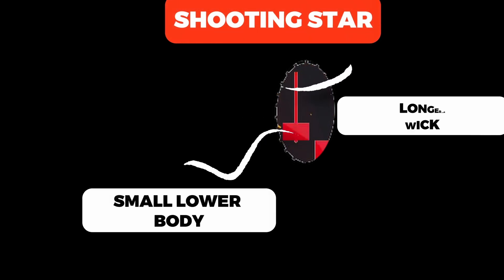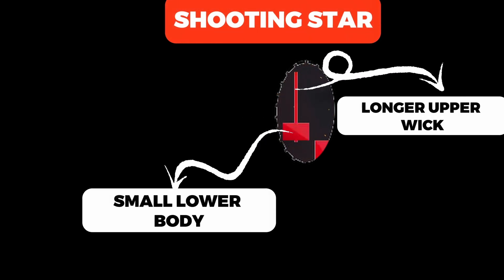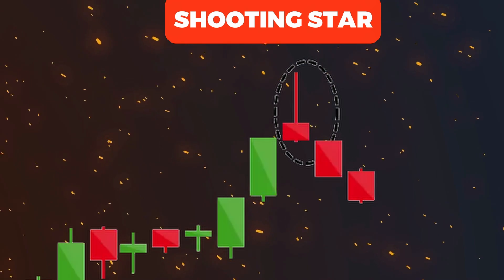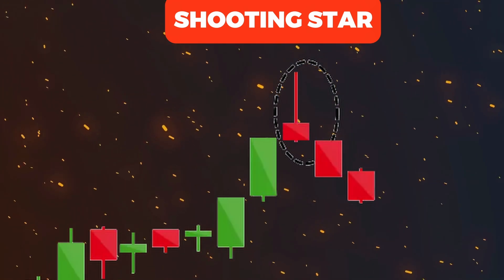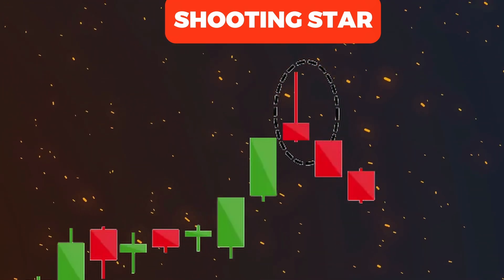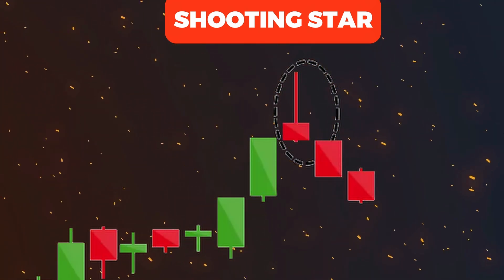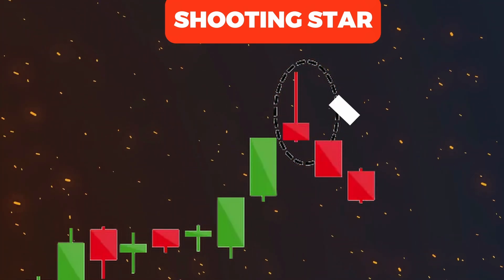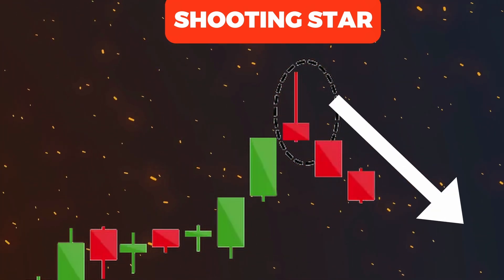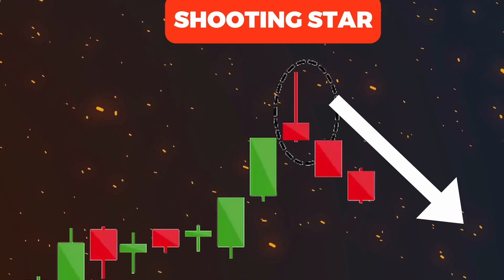The shooting star occurs during an uptrend and features a small lower body with a long upper wick. It signals that the price peaked during the session before closing near the opening level, suggesting a potential bearish reversal.